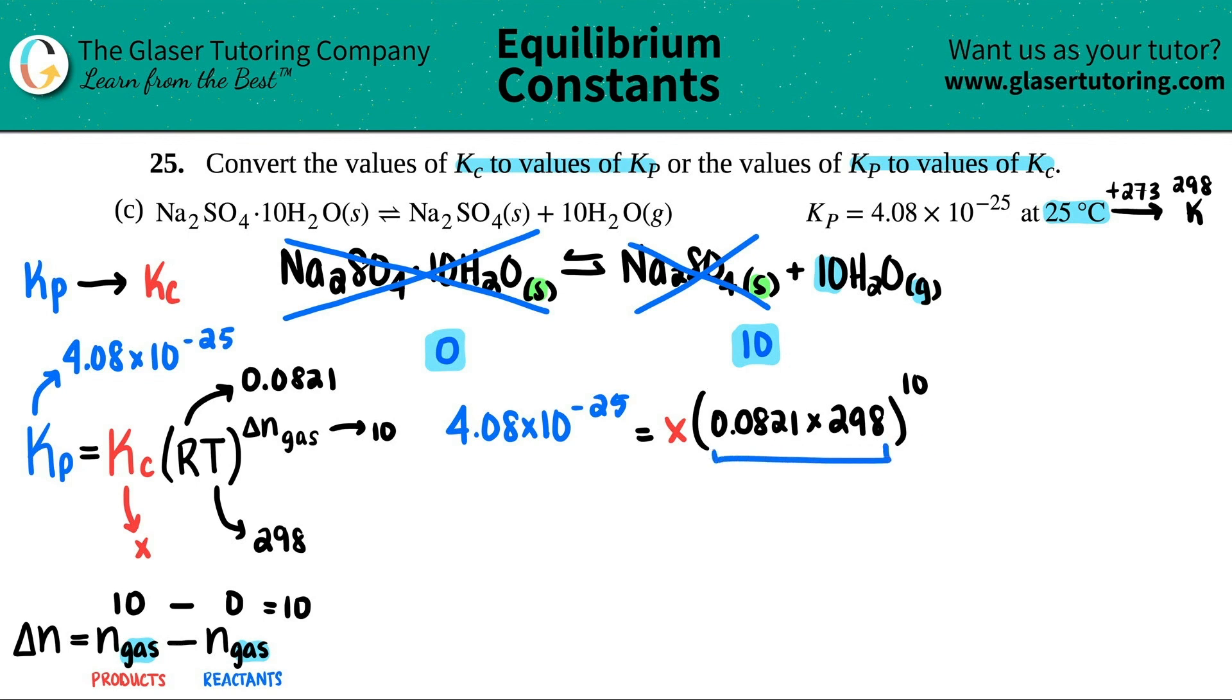So this we're going to be doing first. Remember, parentheses comes before exponents. So 4.08 times 10 to the negative 25th equals X times whatever that is. You can round 24.4658. I'm just going to keep it as consistent as I can. This is raised to the 10th.